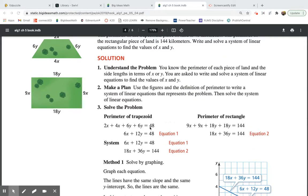So on this problem, this is the one for the trapezoid. They did 2x plus 4x plus 6y plus 6y equals 48. So you can combine your x's. So 2x and 4x is 6x. 6y and 6y is 12y. So there's one of the equations. Then they did the same thing for the rectangle. 9x plus 9x plus 18y plus 18y is 144. You can combine your x's and you can combine your y's. So these are the two equations that we are solving for.